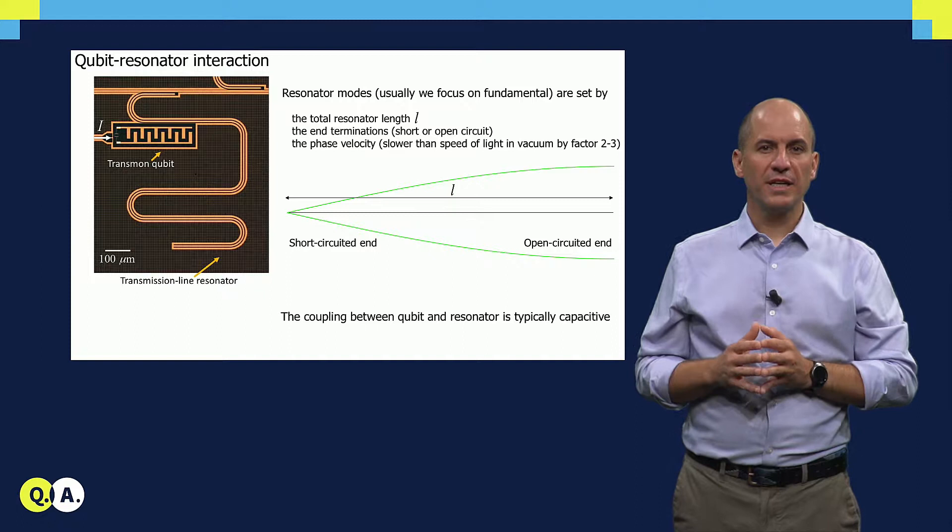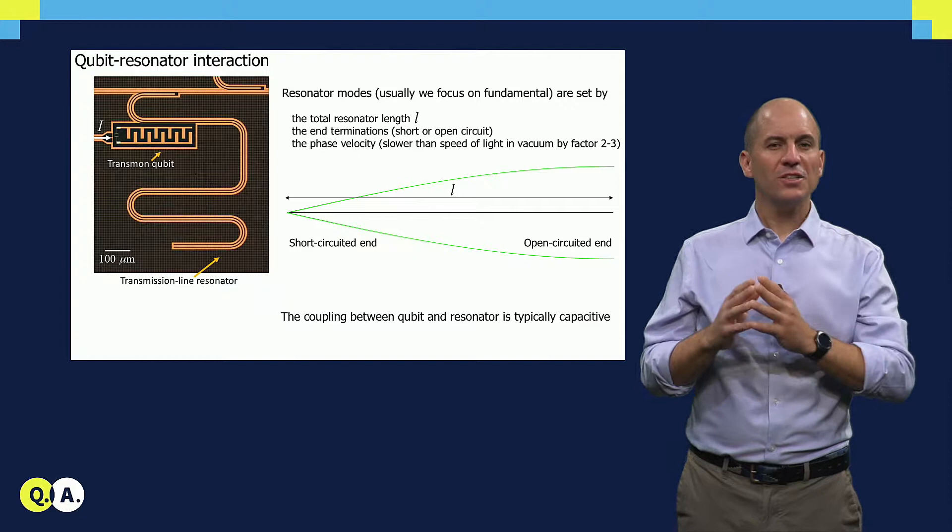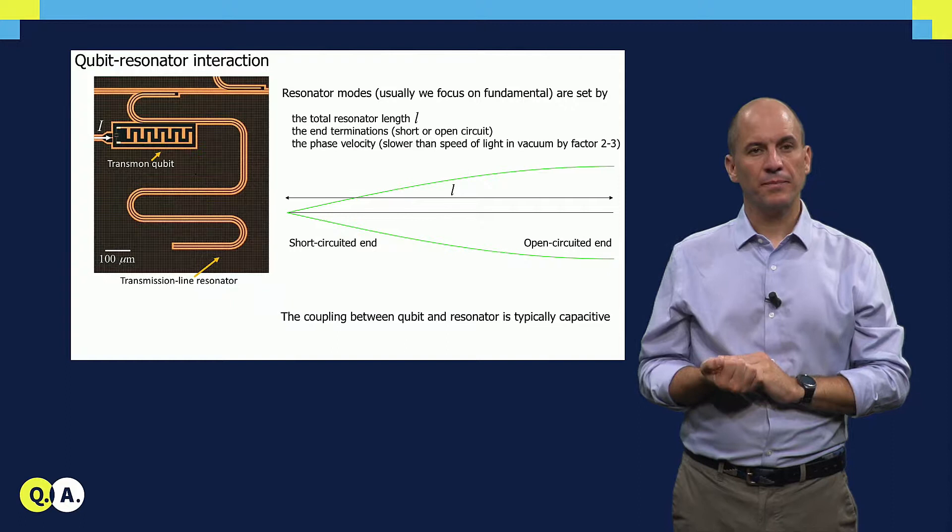We build these resonators from coplanar waveguide transmission lines that are terminated with either open or short circuits. For example, the resonator I show you here has a short at the far end and an open termination at the close end. Well, it's not exactly open. The resonator at this end couples capacitively to a feed line that will be used later to interrogate the scattering properties of the resonator near its fundamental frequency.